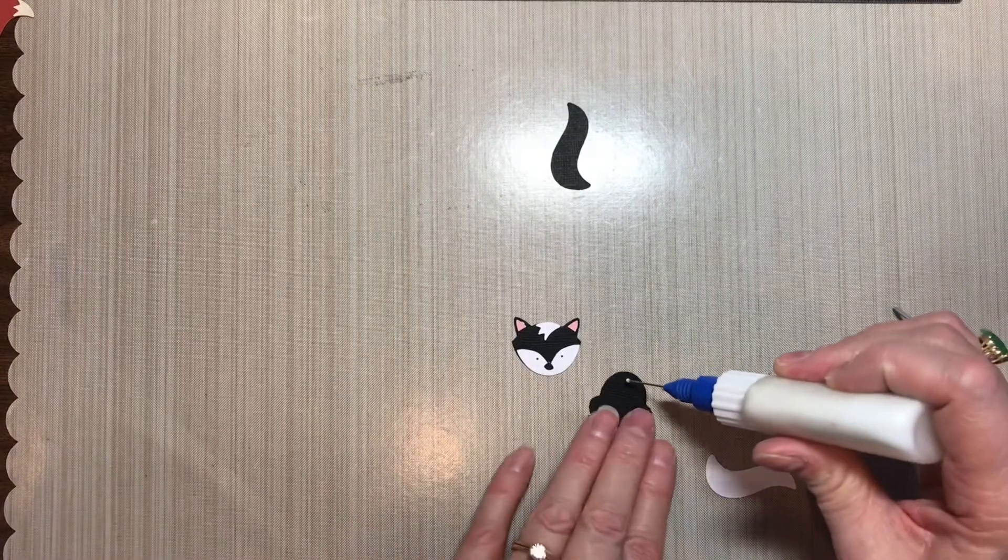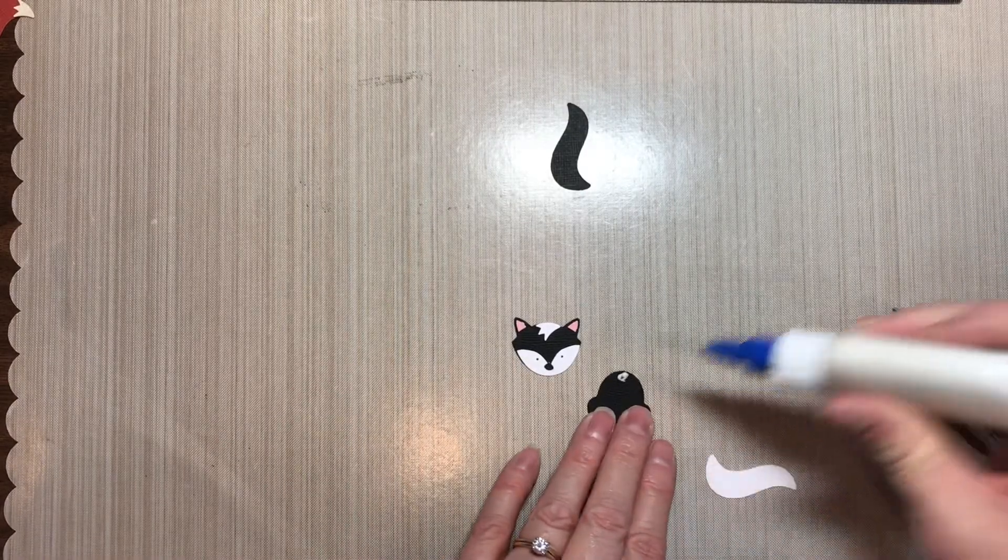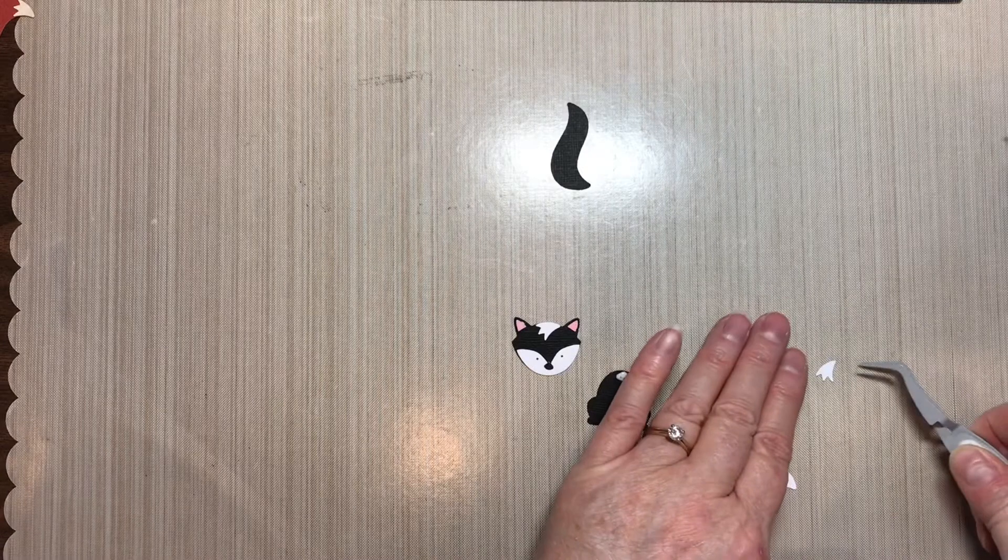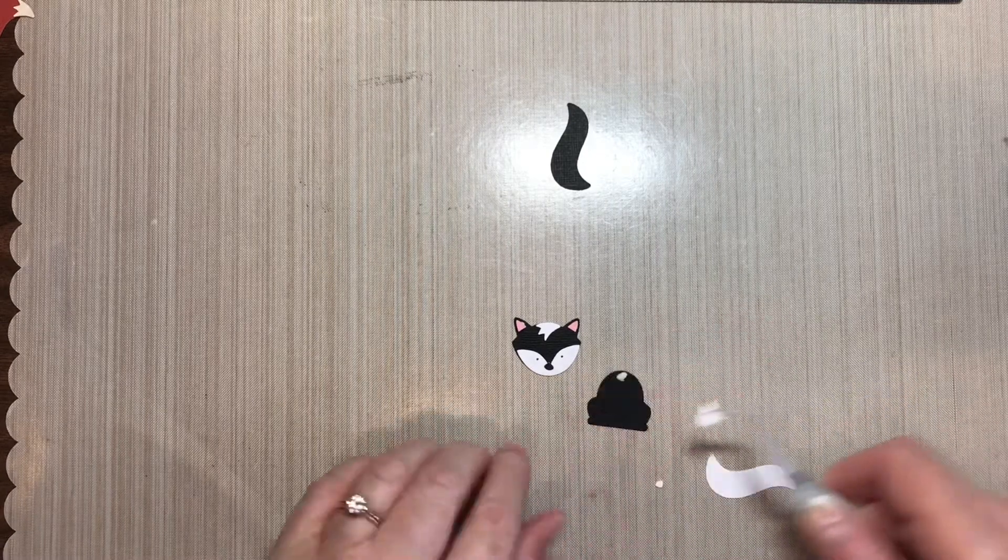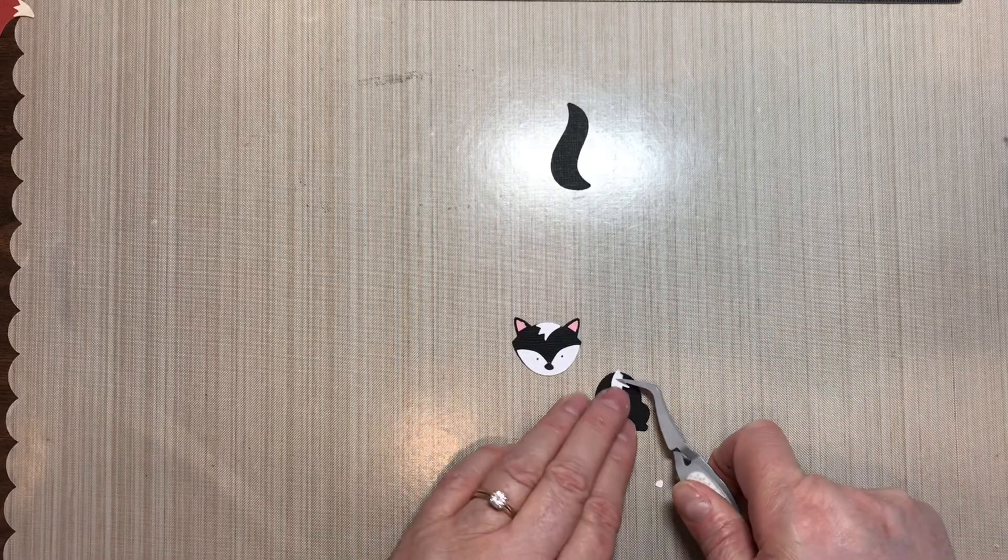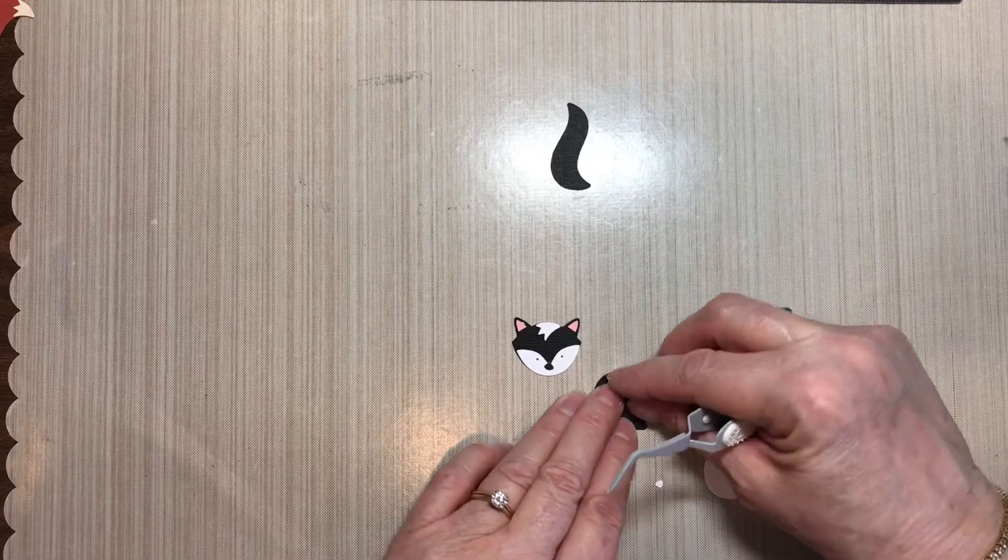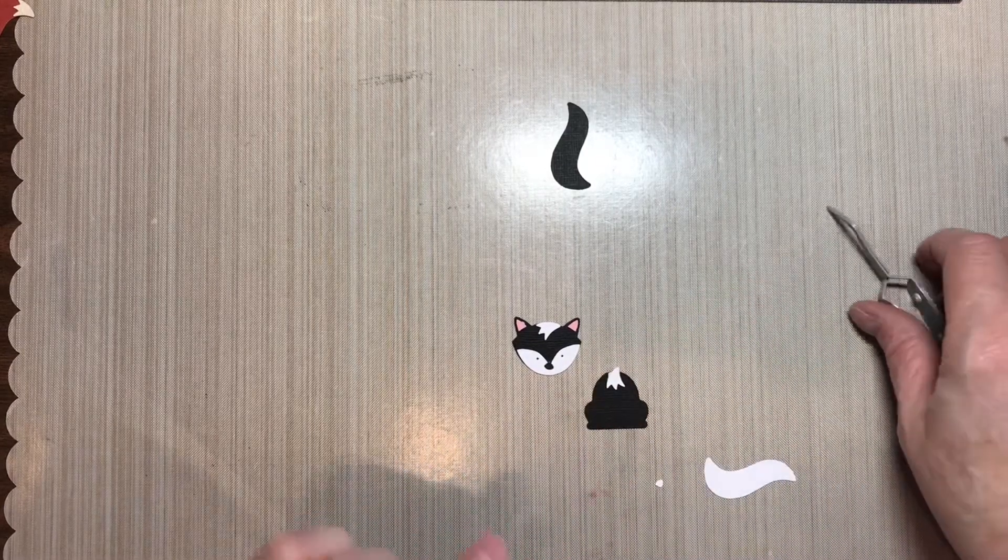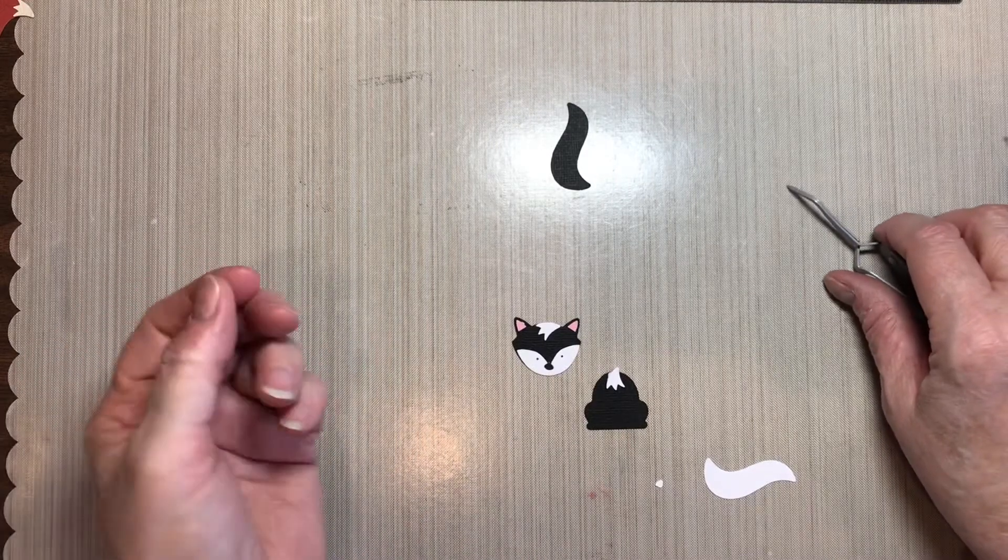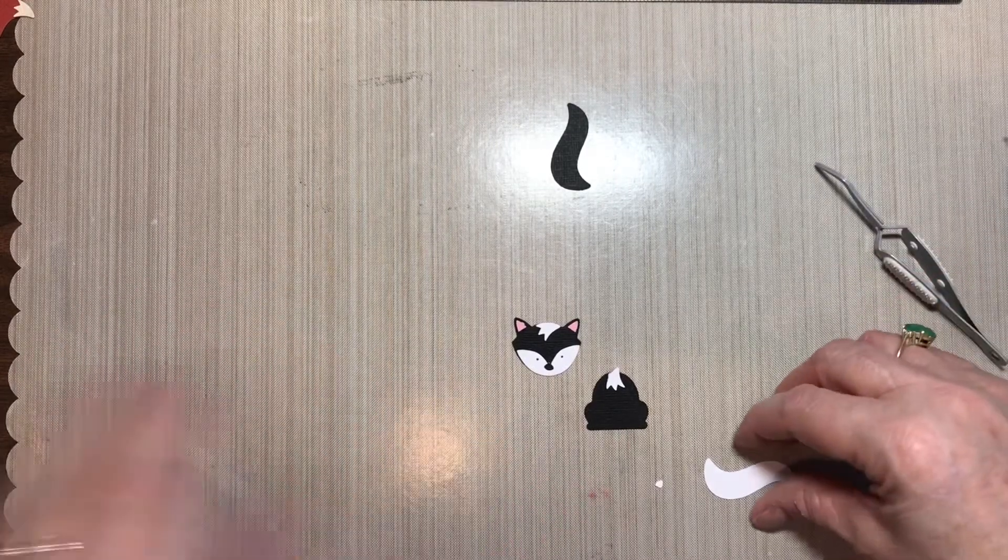And on his body, I'm going to put another little fluff of fur at the neck. And again, the part that sticks up is going to be covered by his head, so I'm not even going to bother trimming that off.